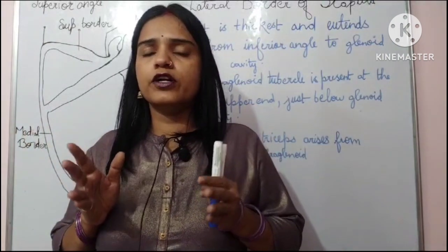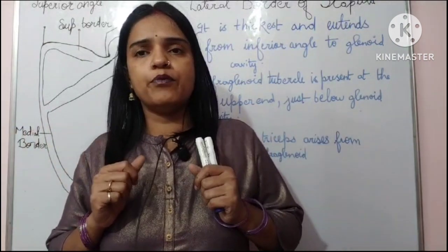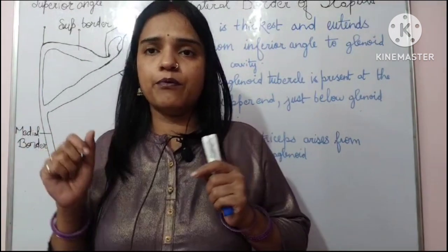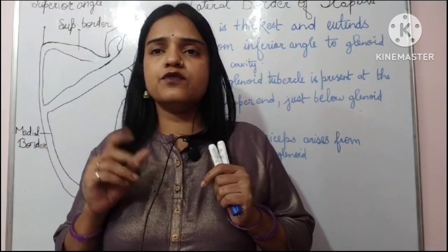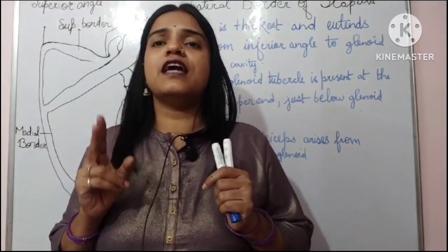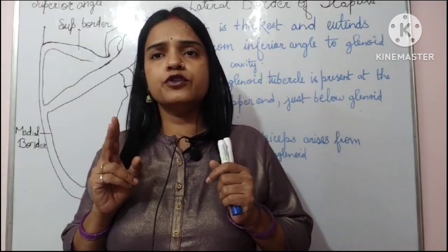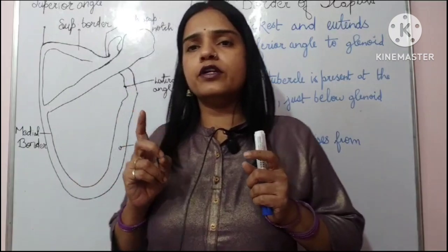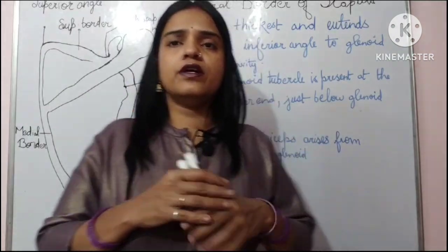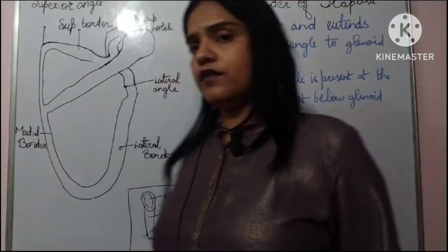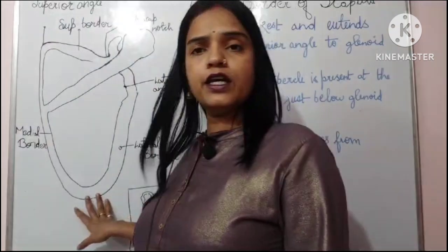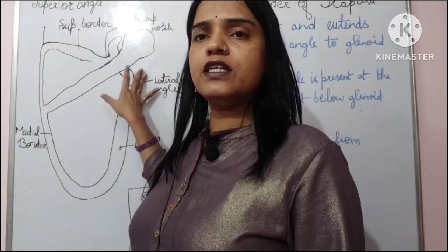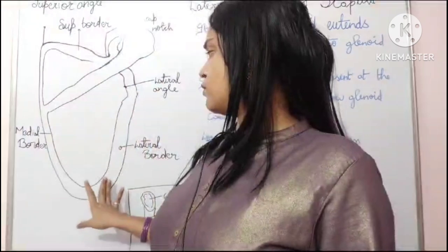Let's study about the lateral border of the scapula. The lateral border is the thickest border of the scapula because it acts as a fulcrum during rotation. It runs from the inferior angle to the glenoid cavity.